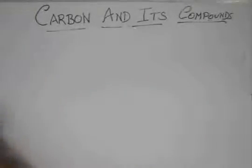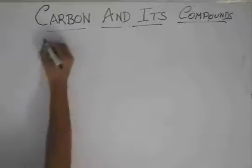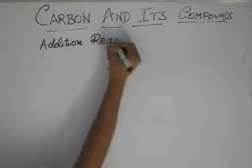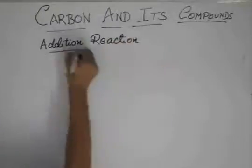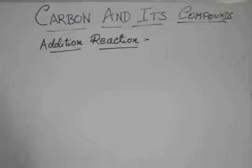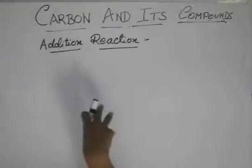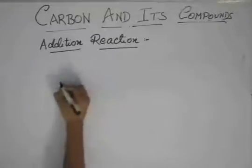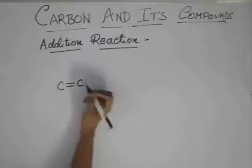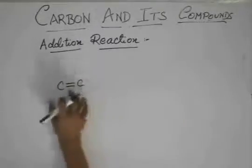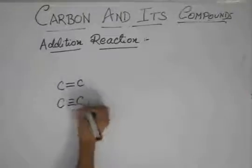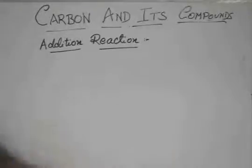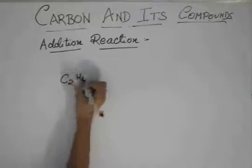Now, the next type of reaction is addition reaction. As the name suggests, addition reaction means something is getting added. So in this reaction, the reactant is a double bonded, double bond containing compound or a triple bond containing compound. This is the reactant. Suppose we take C2H4, which is ethene.